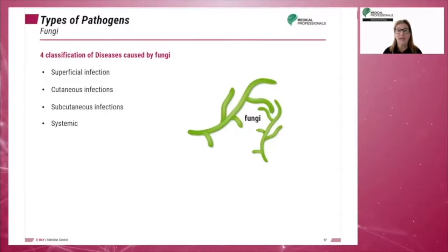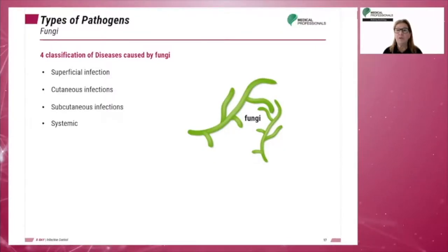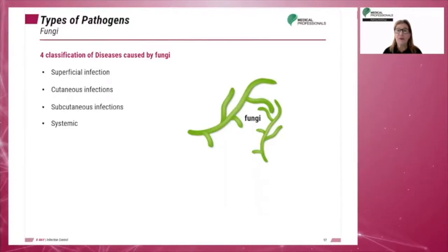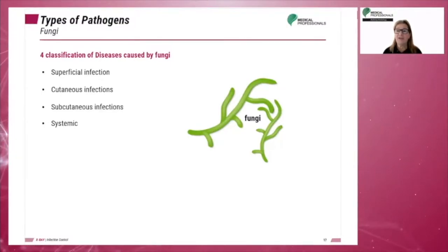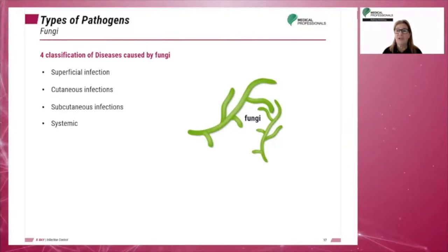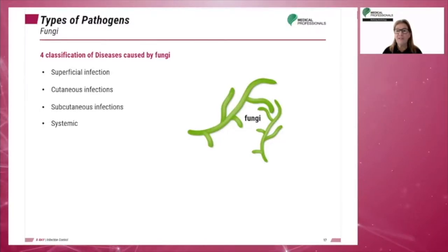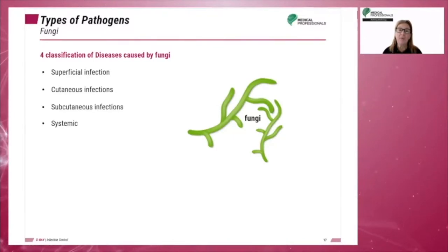Fungi can be macroscopic, such as mushrooms, or microscopic, such as yeast and mold. They are larger than bacteria. There are four classifications of diseases caused by fungi: superficial infection, such as a discoloration of the hand; cutaneous infections, involving the hair, nails, or skin; subcutaneous infections, which describe when the disease enters the human host; and systemic infection, which describes when the disease enters the circulatory or lymphatic system. Common fungal diseases include athlete's foot, ringworm, and tinea nigra, which attacks the upper layers of the skin.